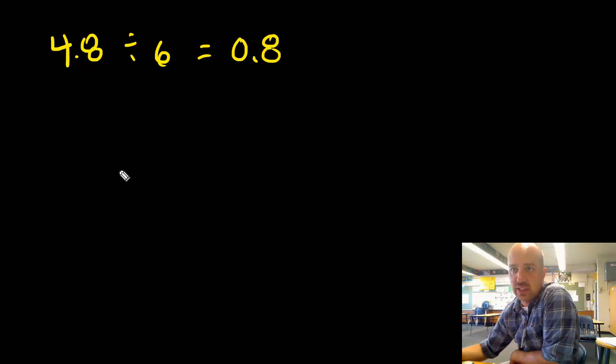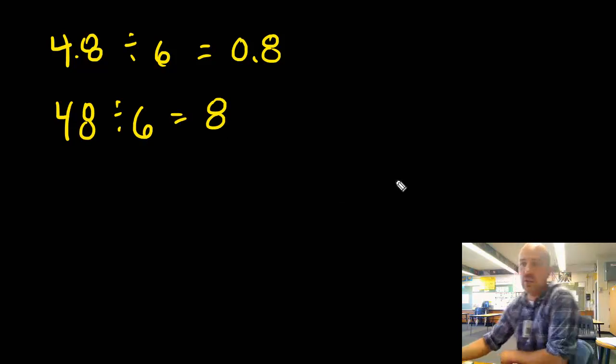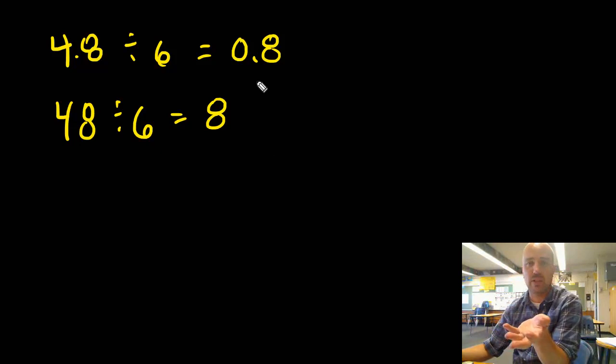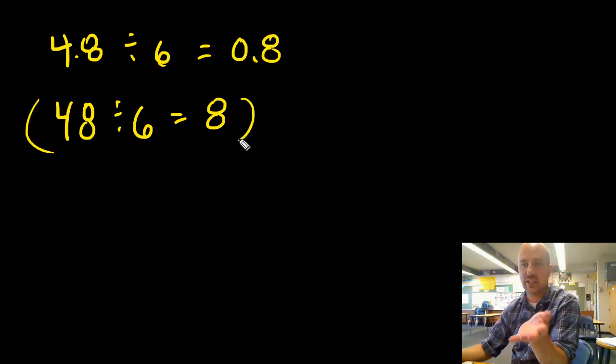The last thing I want you to understand: 4.8 divided by 6 equals eight tenths, and 48 divided by 6 equals 8. Both problems involve the digits 4, 8, and 6, and both answers involve the digit 8. The only difference is that 4.8 is 10 times less than 48, so the answers relate by a factor of 10.